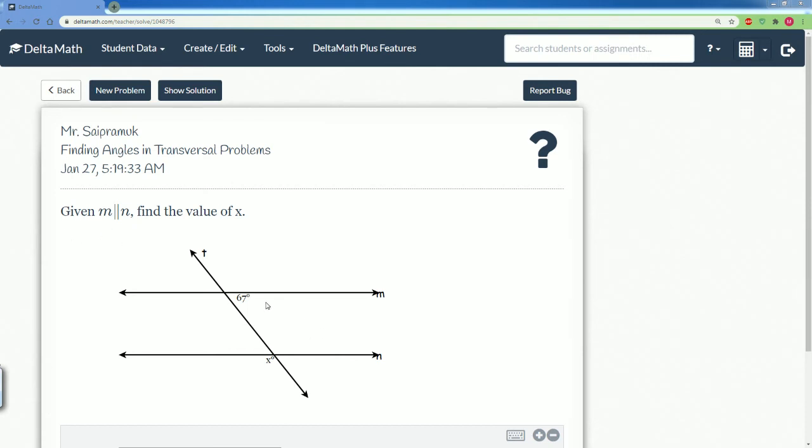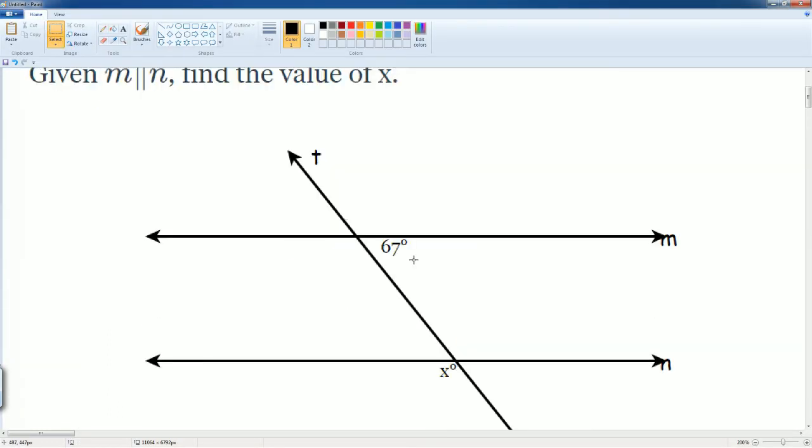Let's do this problem now. This asks, given that line M is parallel to line N, you want to find the value of X. Let's see how these angles are related on this parallel line. We see that we can slide this angle of 67—we're gonna slide this angle down. We're gonna slide it down right here, and again it's still 67 because we just slide it down using translation.